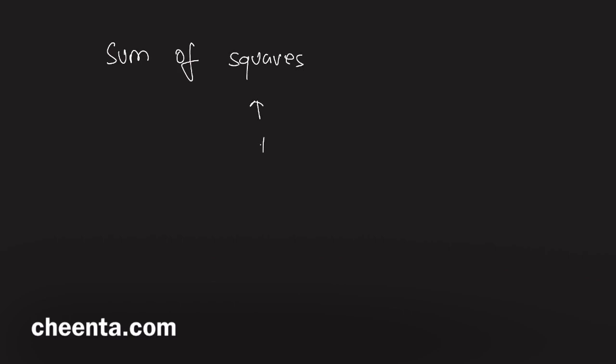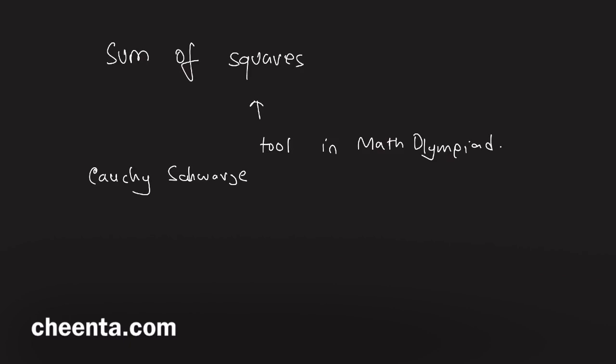Let's talk about sum of squares. This is a very useful tool in math olympiad. In fact, sum of squares is heavily used in proofs of the Cauchy-Schwarz inequality, and this proof tells you a lot — it tells you how to apply this method over and over again. So we will look into the proof and understand how to apply sum of squares.